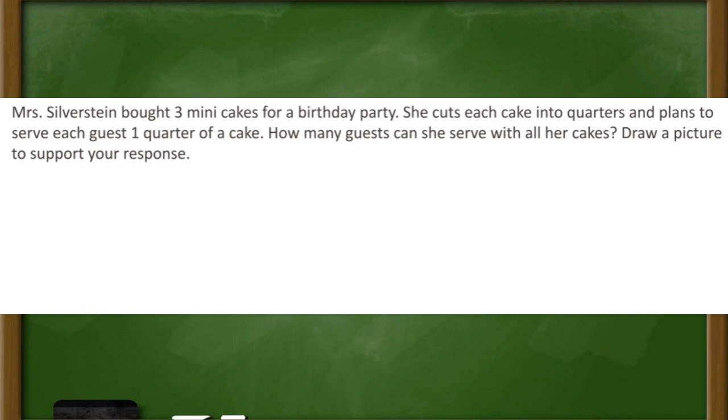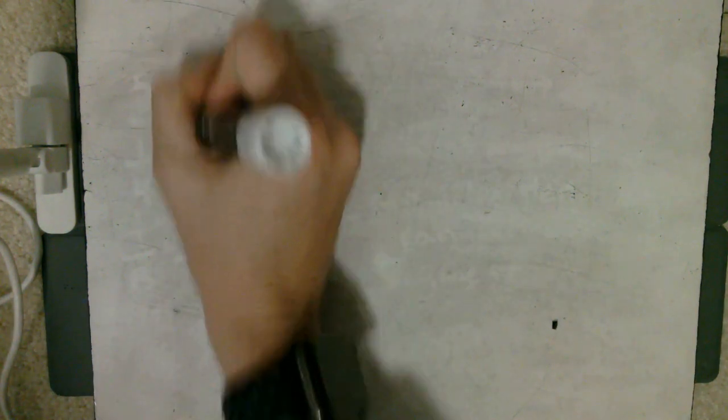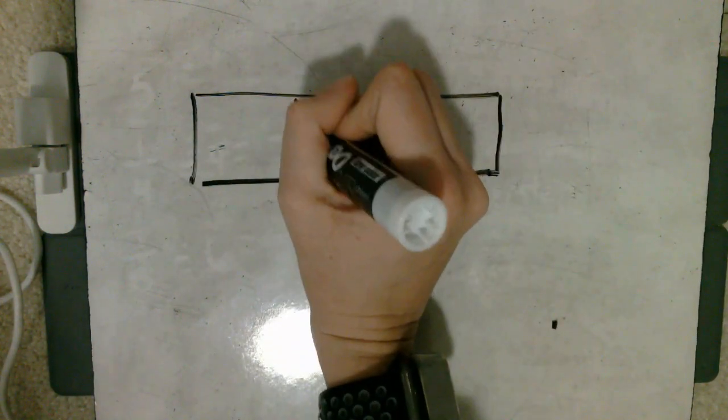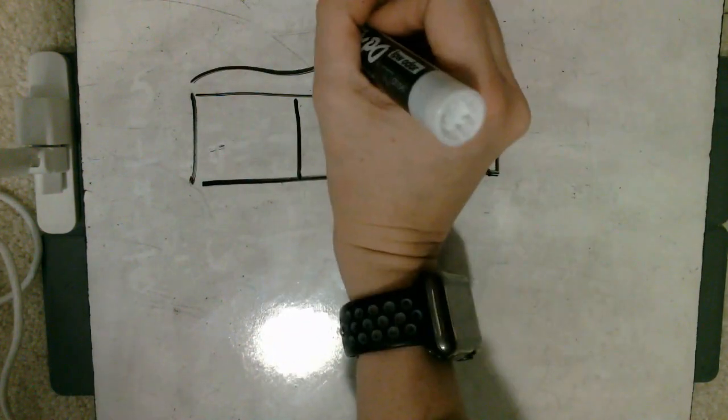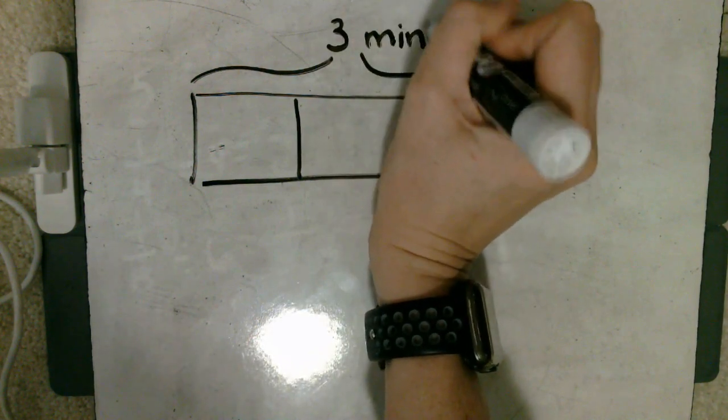We will work on the first problem together. Let's read problem number one together before we go through the methods to solve the problem. Ms. Silverstein bought three mini cakes for a birthday party. She cuts each cake into quarters and plans to serve each guest one quarter of a cake. How many guests can she serve with all her cakes? Draw a model to support your response. We know from the problem that Ms. Silverstein bought three mini cakes, so I'm going to start by drawing a picture of those three mini cakes.